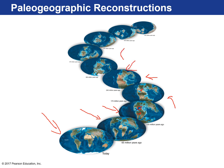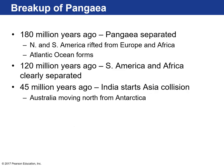Going further back, here's what our Earth looked like about half a billion years ago. To summarize: 180 million years ago Pangea began to separate, with North and South America rifting from Europe and Africa forming the Atlantic Ocean Basin. 120 million years ago, South America and Africa separated. 45 million years ago, India started colliding with Asia, creating the Himalayan mountains — our youngest mountain chain — and Australia began moving north from Antarctica, thus creating the Great Barrier Reef.